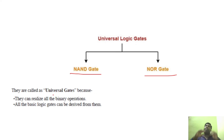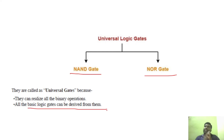Using universal gates, any binary operation can be realized. The basic gates are AND gate, OR gate, and NOT gate.